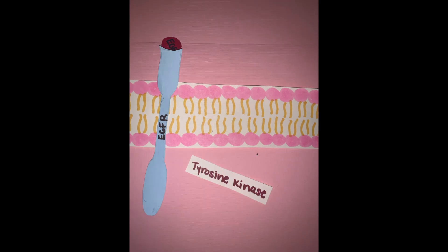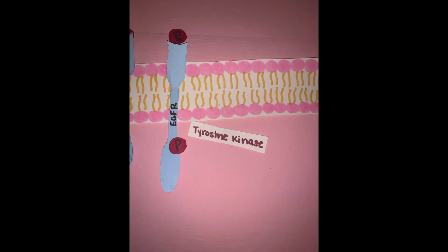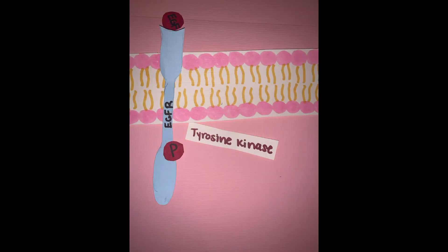Binding of the EGF triggers the receptor through phosphorylation, bringing upon other proteins. In this case, the first type of interaction would be with a protein known as GRB2.